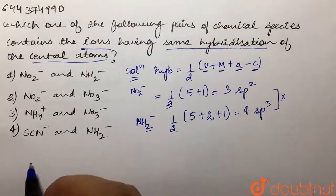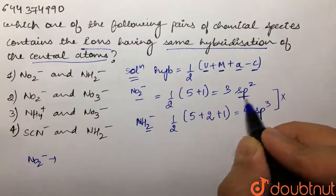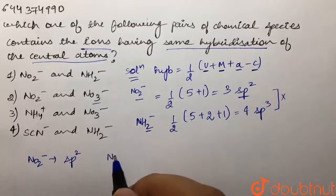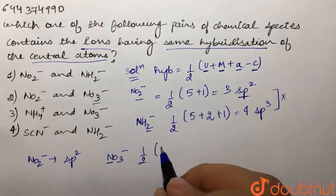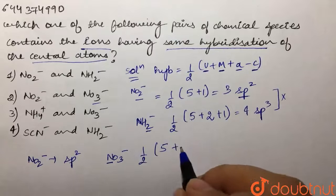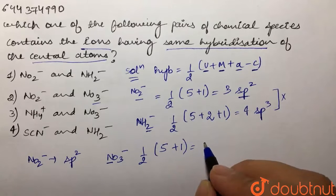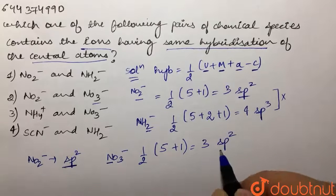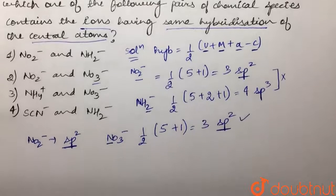For Option 2, we have NO₂⁻, which we already calculated as sp2 hybridized. Then we have NO₃⁻: half of (5 + 1) / 2 = 3, so it is also sp2 hybridized. Both have sp2 hybridized central atoms, so this is one of our correct options.